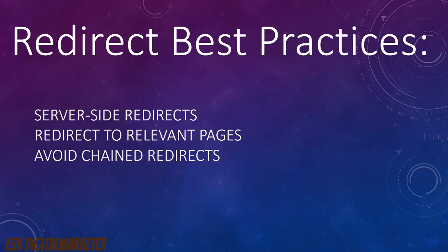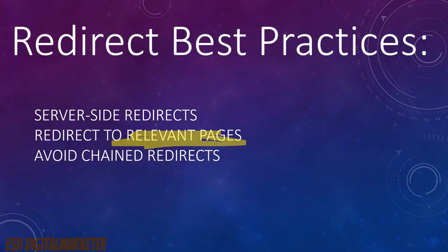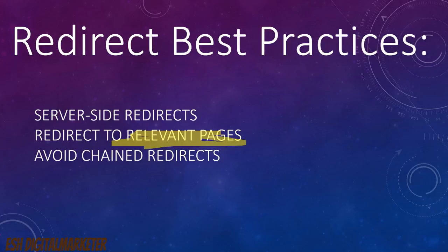The next best practice is to redirect only relevant pages. Please note: redirect only to relevant pages, because irrelevant redirects are responsible for soft 404 pages. If search engines find the page you redirected to is not similar in content, they would consider it a soft 404. Most commonly webmasters prefer to redirect to home pages even when pages are not relevant — when a user intends to visit a product page and gets redirected to the home page, that is not correct. Avoid redirecting to home pages; redirect to relevant pages instead.